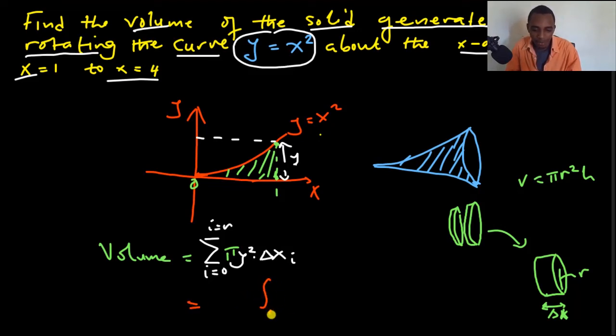So this is the same as integrating. So integrating from 0 to whatever the upper limit is. I'm just not going to put the limits now, but it's integrating pi y squared dx. So as delta x becomes very small, we can approximate that now using dx. So this is going to be our volume.